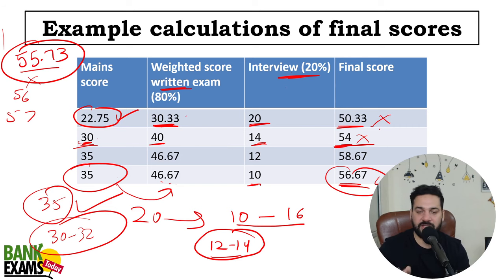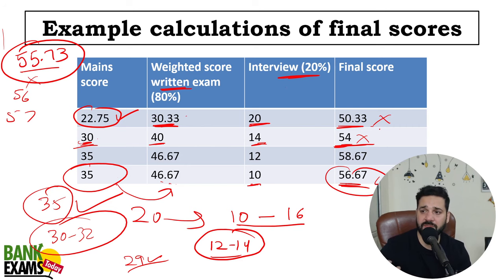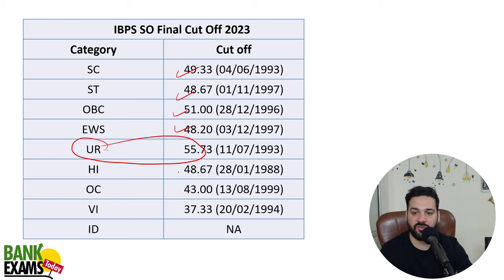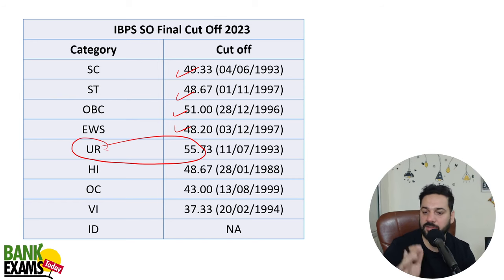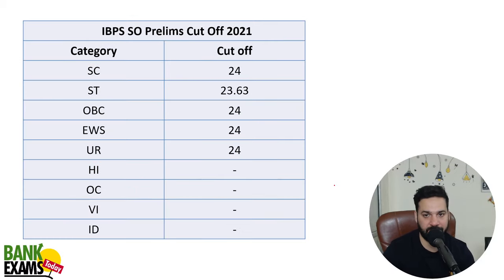I know a lot of people will say ki kisi ke 29 marks aaye the, vo phir bhi nikal gaya. One of my students scored 28 in 2020 — 28 marks aaye the, phir bhi 1000 vacancy thi, hamare 200 students pass hue the. What happened at that point was ki cut-off bahut kam chala gaya tha — but generally yeh lucky draw nahi nikalta sabka. That's the scenario — final cut-off 55.73. Baaki SC ka 49, ST ka 48.67, OBC ka 51, 48.20 for EWS. Aap apni category ka example nikal sakte ho — iske pre-cut-off ka koi relevance nahi hai.